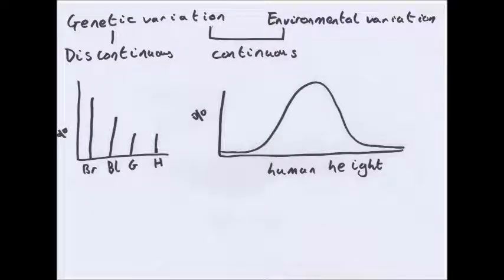There are two types of variation: genetic variation and environmental variation. Genetic variation is what you get from your genes — characteristics from your genetic material. Environmental variation is something that occurs due to changes in the environment. There is also discontinuous and continuous variation. Discontinuous variation is always genetic; continuous variation can be either.